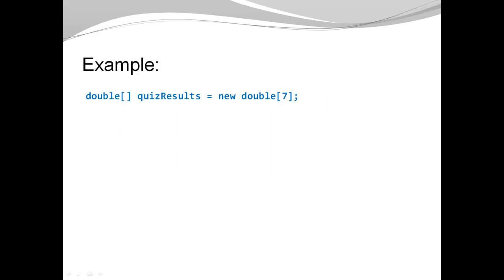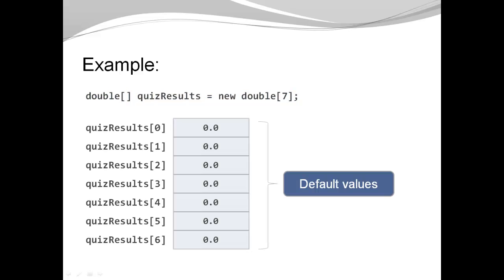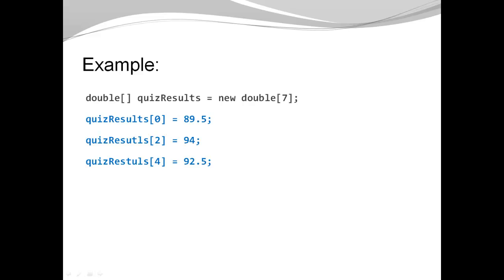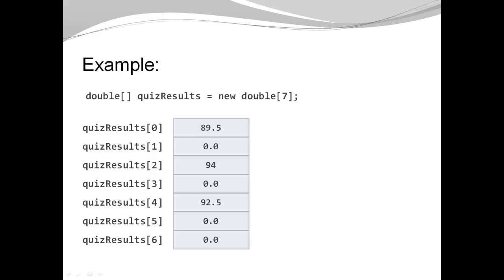Let's have a look at another example. Here, I have a variable quiz results. It is of type double array, and it is initialized with a new double array of size 7. So you can see I have all my elements initialized with the default value. And I have indices ranging from 0 to 6, where 6 is the length of quiz results minus 1. Now I want to add some actual quiz results. So I say my element on index 0 should be 89.5, index 2 should be 94, and the value of the element on index 4 should be 92.5. So I'm going to look at my array again, and I can see the newly entered values.